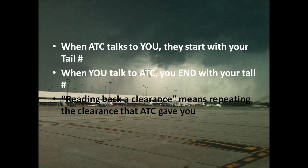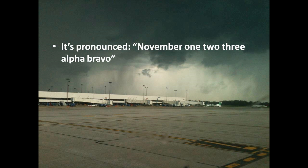Everything in aviation and air traffic control uses the phonetic alphabet — the same one the military uses. So instead of saying N123AB, you say November 123 Alpha Bravo. You can always do a Wikipedia or Google search to find the entire phonetic alphabet, but for this lesson we'll assume you know it and move on.